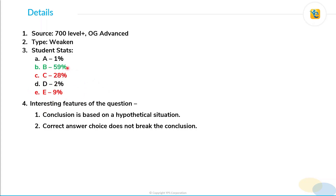Choice E is also a bit popular. Now what is interesting about this question? The conclusion in this question is based on a hypothetical situation — that is one thing. The second thing is that the correct answer choice does not always break the conclusion. Many students have some doubts related to the correct answer choice, and it is not that choice C is very tempting — it is, but it can still be rejected easily.